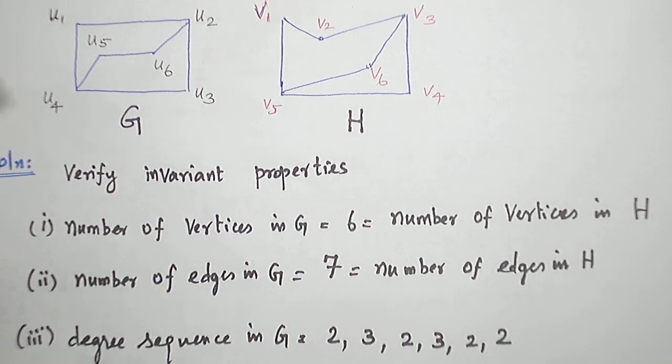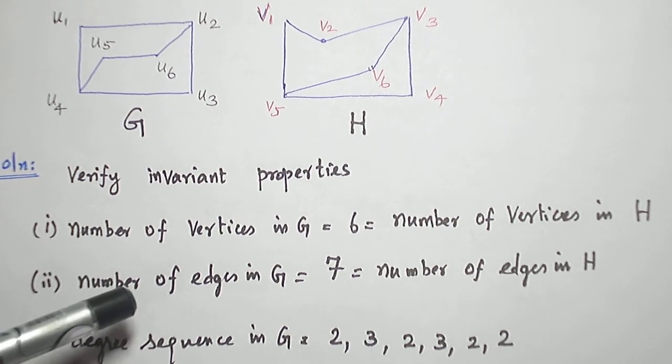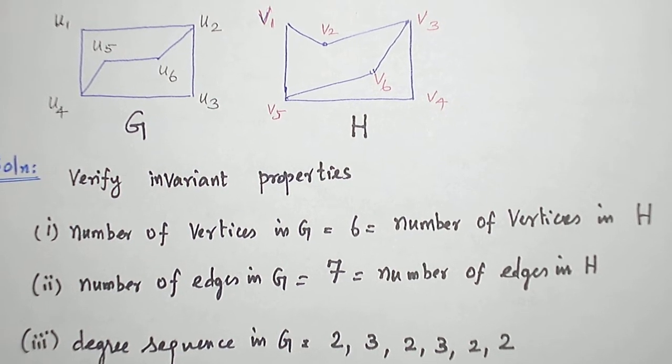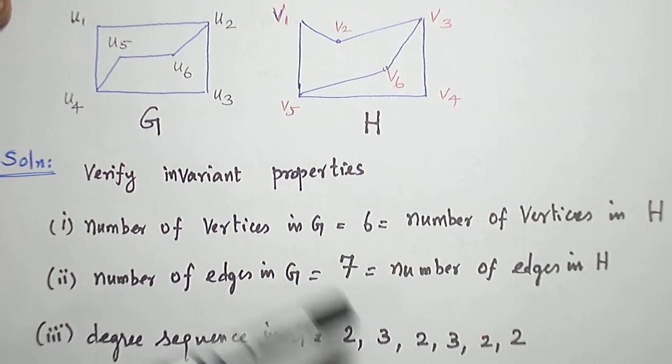How many vertices are there in G and H? Both graphs have six vertices. And how many edges are there in G and H? Both graphs have seven edges. And what about the degree sequence?